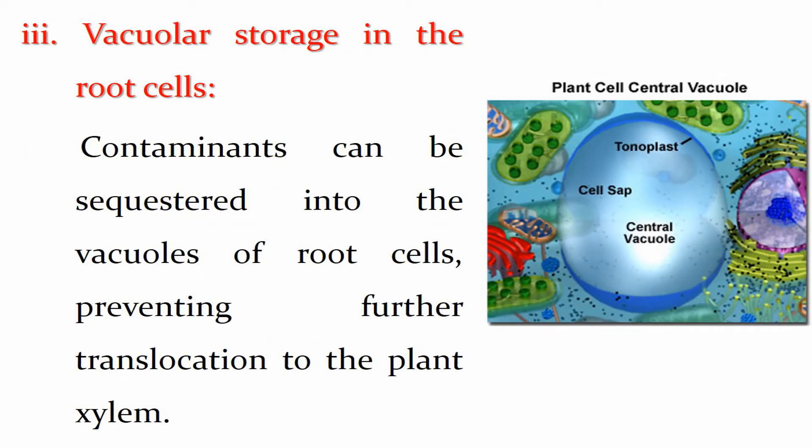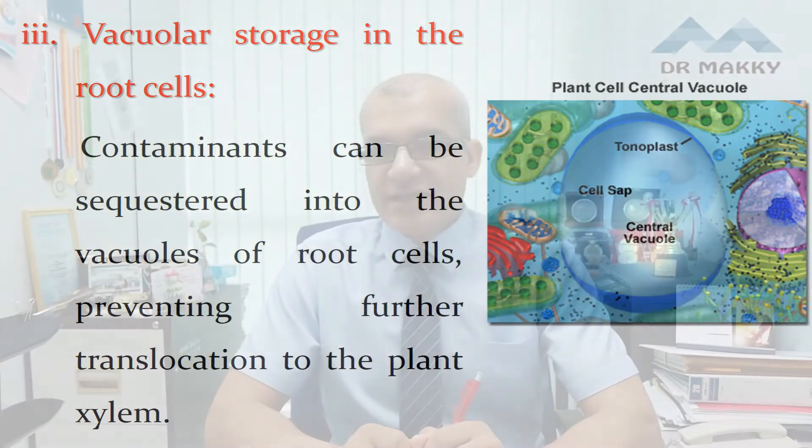The third sub-mechanism of phytosequestration is vacuolar storage in the root cells. In this mechanism, contaminants can be sequestered or trapped into the vacuoles of the root cells, preventing further translocation to the plant xylem. So in this mechanism, the contaminant cannot migrate from one place to another.